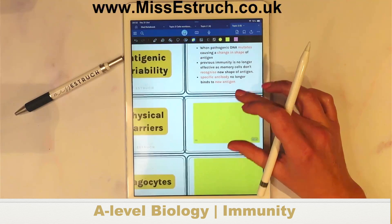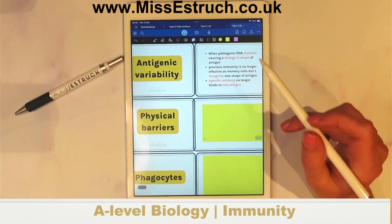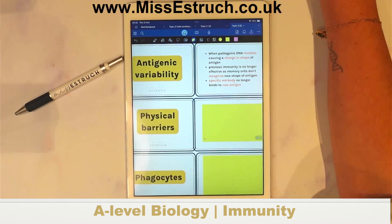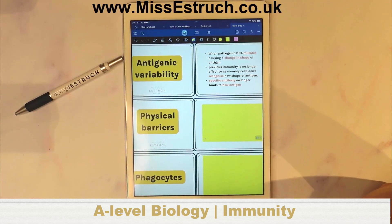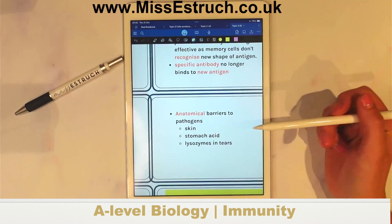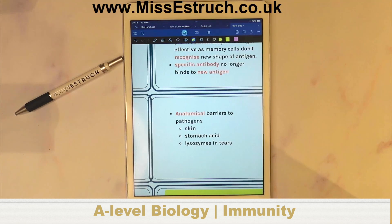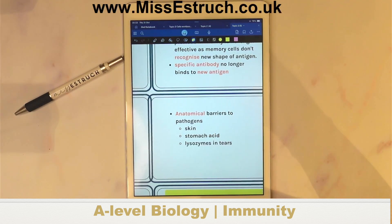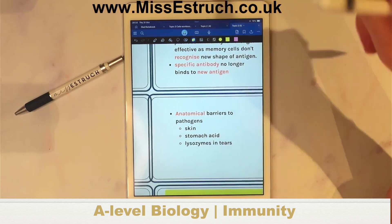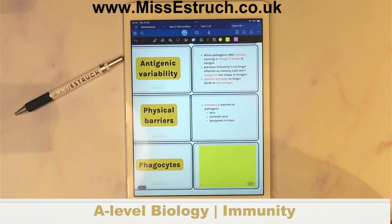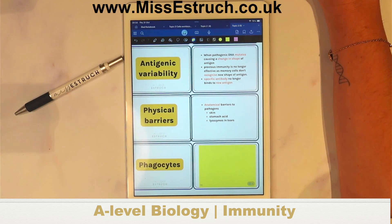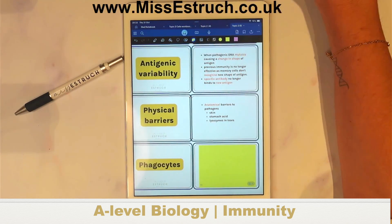Physical barriers — you need to list examples of physical barriers that prevent a pathogen from entering the bloodstream. These include skin, stomach acid — sometimes people don't realise that counts — lysozymes, tears, mucus, cilia, and hydrochloric acid. Good answers coming through. Next: phagocytes. The definition: white blood cells that engulf pathogens — they're non-specific, which is a good extra detail. They're also antigen-presenting cells. Macrophages are examples.